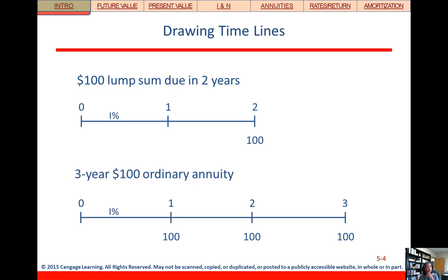Same way, if we had a three year ordinary annuity, an annuity means we've got the same cash flow occurring for multiple periods. So three periods of $100. So now you see that our timeline is going out to three periods, and we've got three cash flows of $100.